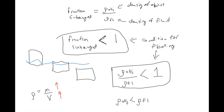Let's work an example. A cruise ship has a weight of 200,000 gross tons, which converts to about 2×10⁸ kilograms. If we want the density to be less than the density of water — which is 1000 kg/m³ — then the density of the ship equals mass of the ship divided by volume of the ship, and that has to be less than the density of water. Since we're given the mass, we solve for the volume.